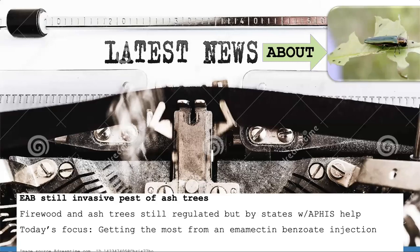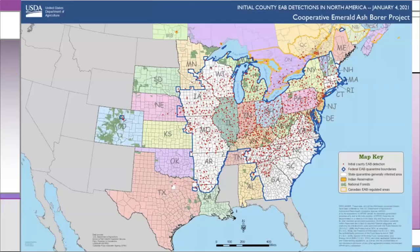Today's focus is to help you get the most protective value from an application of emamectin benzoate on a tree. It's important to give background on why the federal quarantine has been dropped. In this map, every single red dot is a reported detection of Emerald Ash Borer — usually the first report in each county — and you can see it's fairly widely distributed. This is why they decided to focus efforts on management rather than spread, while still giving a hand to western states that have yet to get Emerald Ash Borer.